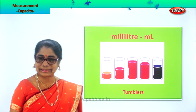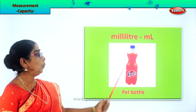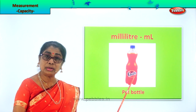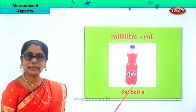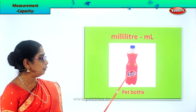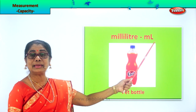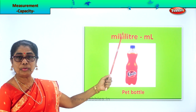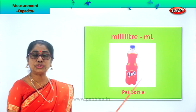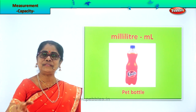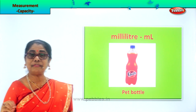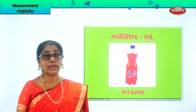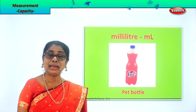We buy juice from the shop. You buy juices and water, and it comes in a pet bottle. Now that pet bottle, if you look carefully, it's written there: milliliter — 500 milliliter or 200 milliliter. The short form of milliliter is ML. When you go to the shop to buy juice, whether it's 50 ml, 100 ml, or 500 ml, look at the pet bottle and see what's written there. You can get juice, water, oil, and things like that.